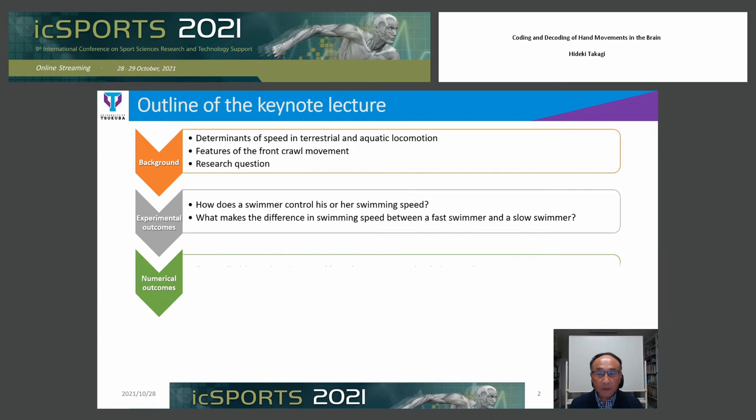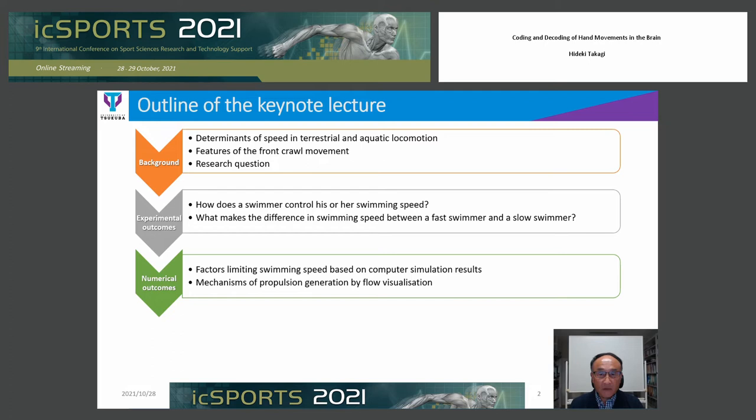Thirdly, based on the results of the numerical outcomes, I will explain the factor limiting the swimming speed based on the computer simulation result, and then I will explain how the propulsive force is generated based on the result of the flow visualization experiment.